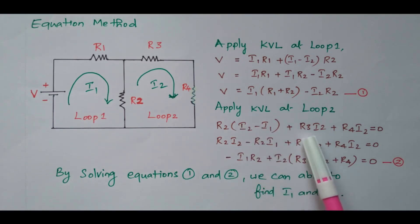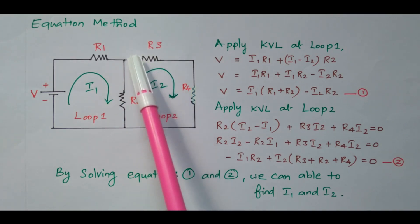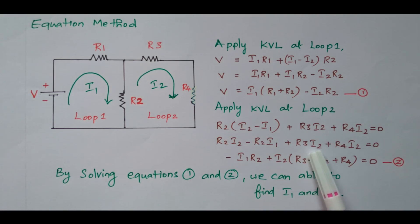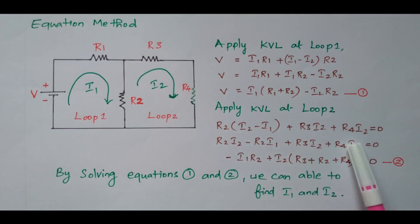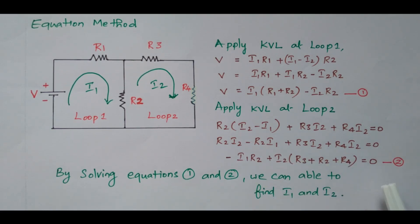In R2 both currents flow, while in R3 and R4 only I2 flows. After simplification: (I2 − I1)×R2 + I2×R3 + I2×R4 = 0, which gives −I1×R2 + I2(R2 + R3 + R4) = 0. This is equation number 2.